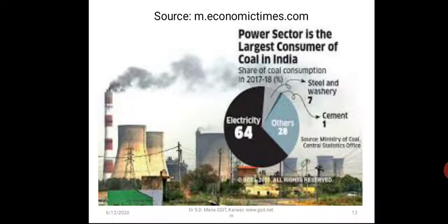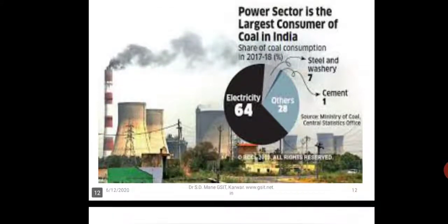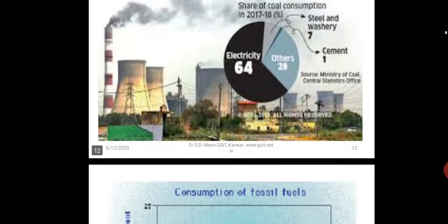We all say that electricity is a very clean power at the point of use, but at the point of generation it produces a lot of smoke. Thermal power plants emit a lot of smoke and fly ash. Almost 60 percent of the power in India and across the world comes through coal, and this has very disastrous consequences.